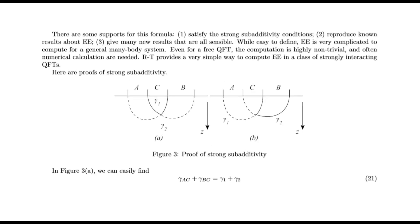There are some supports for this formula: One, it satisfies the strong sub-additivity conditions. Two, it reproduces known results about entanglement entropy. Three, it gives many new results that are sensible. While easy to define, entanglement entropy is very complicated to compute for a general many-body system. Even for free quantum field theory, the computation is highly non-trivial, and often numerical calculations are needed. The RT formula provides a very simple way to compute entanglement entropy in a class of strongly-interacting quantum field theories.